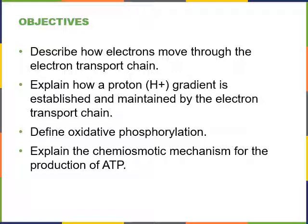Describe how electrons move through the electron transport chain. Explain how a proton gradient, or hydrogen ion gradient, is established and maintained by the electron transport chain. Define oxidative phosphorylation, and explain the chemiosmotic mechanism for the production of ATP.